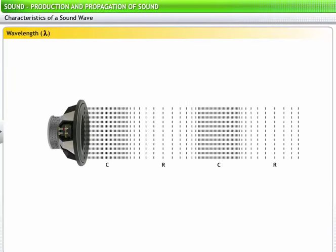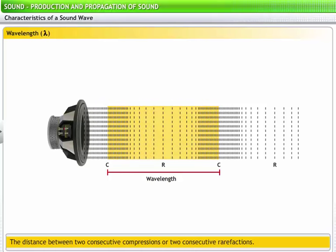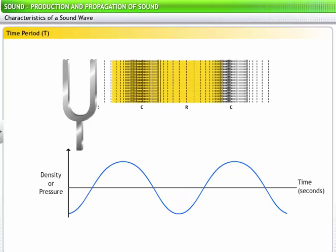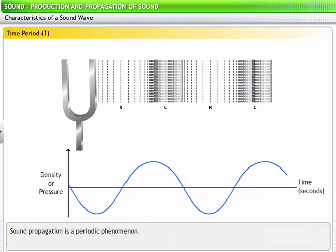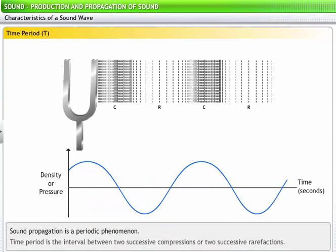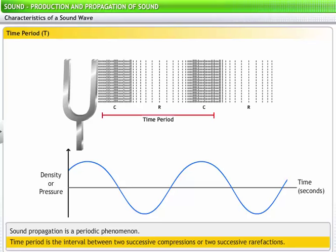A complete sound wave can be considered as the repetition of the pattern of a single wave. That is, it comprises a number of compressions and rarefactions in succession. The length of a single wave is called wavelength. In other words, wavelength is the distance between two consecutive compressions or two consecutive rarefactions. It is denoted by the Greek letter lambda. Since a compression and a rarefaction follow each other in succession, sound propagation is a periodic phenomenon. The interval between the generation of two successive compressions or two successive rarefactions is constant and is referred to as the time period of the wave. Time period is denoted by T and is measured in seconds.